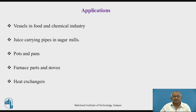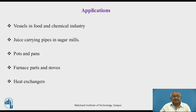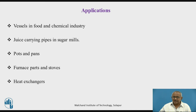Juice-carrying pipes in sugar mills, and pans and pots in sugar mills, are invariably made of ferritic stainless steels. Ferritic stainless steels have very good formability, very good weldability, and very good heat resistance. Furnace parts, gas stoves, and burners can also be made of ferritic stainless steel. The gas stoves we use at home are nowadays made of ferritic stainless steels — earlier they were made of cast iron. Heat exchangers used in industry are also manufactured from ferritic stainless steel due to good formability, good weldability, and good corrosion resistance.